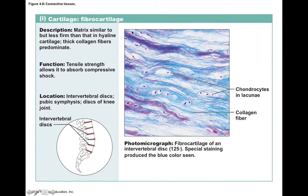Fibrocartilage is identifiable because of its lots of fibers — it may look like dense regular connective tissue, but you can distinguish it by chondrocytes located within lacuna, whereas dense regular CT has more flattened, smushed-looking nuclei. This type of cartilage also tends to have more of a blue stain. Its matrix is firm due to collagen fibers, providing tensile strength to absorb compressive shock. You find fibrocartilage in the intervertebral discs between vertebrae, the pubic symphysis between the two halves of the pelvis, and the menisci of the knee joint.